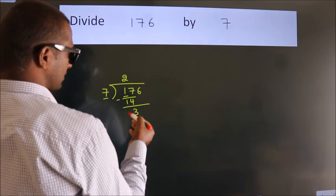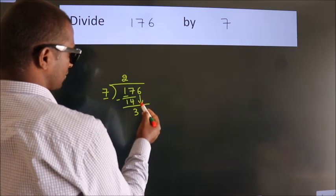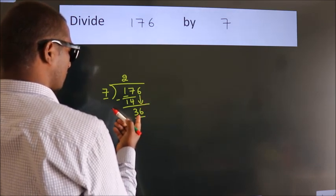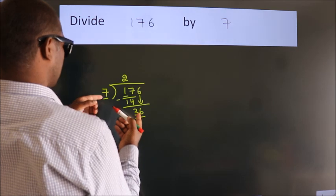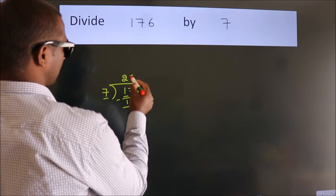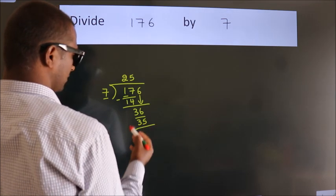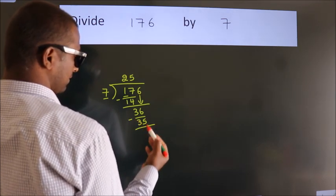After this, bring down the beside number. So 6 down. So 36. A number close to 36 in the 7 table is 7 fives, 35. Now, we subtract. We get 1.